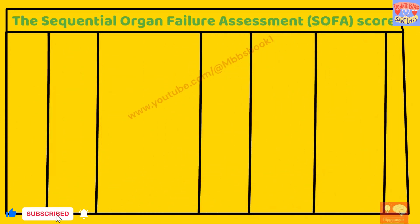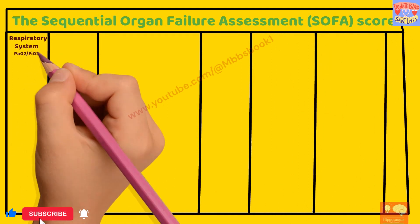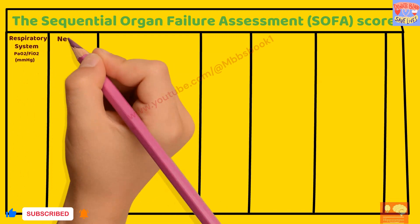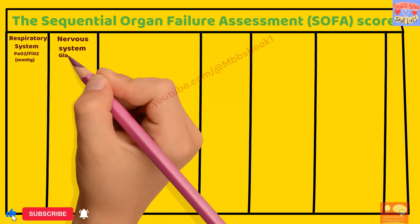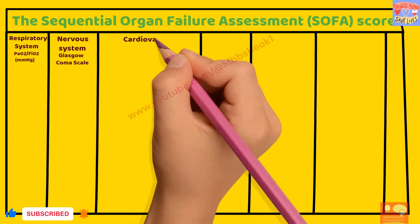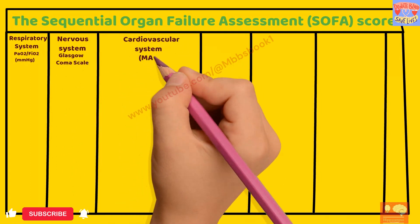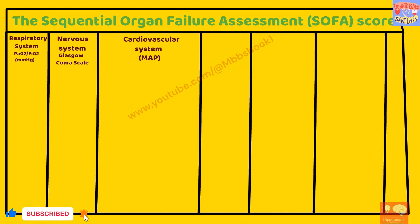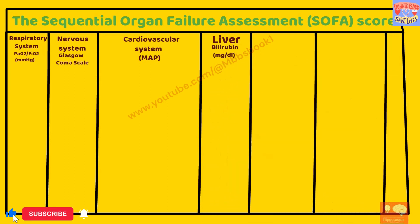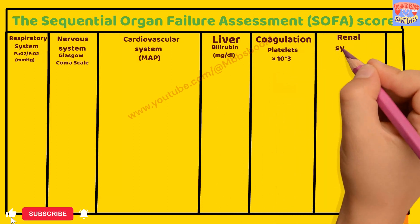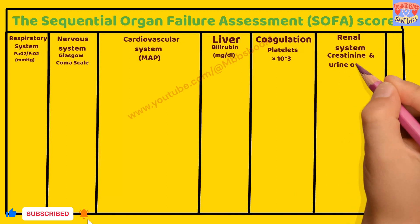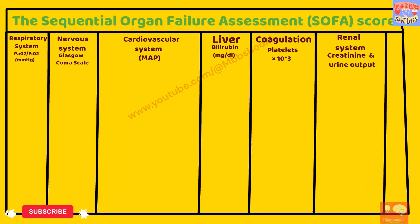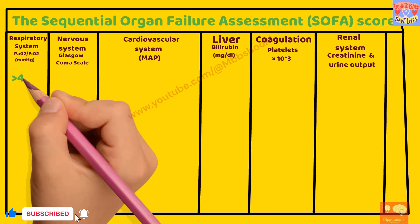In SOFA we use: first, the respiratory system where we use PF ratio, that is PaO2 divided by FiO2 in mmHg; second, the nervous system where we use Glasgow Coma Scale; third, cardiovascular system where we use mean arterial pressure or vasopressor required; fourth, liver where we use bilirubin; fifth, coagulation profile where we use platelets; sixth, renal system where we use creatinine and urine output. The score is given from zero to four.